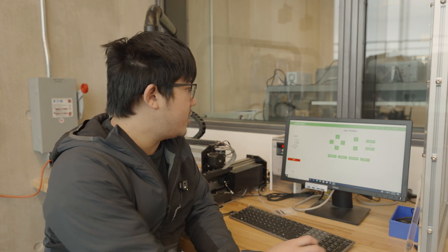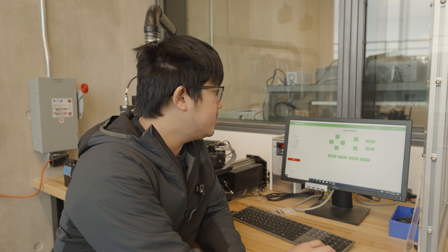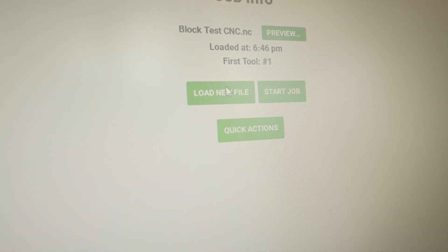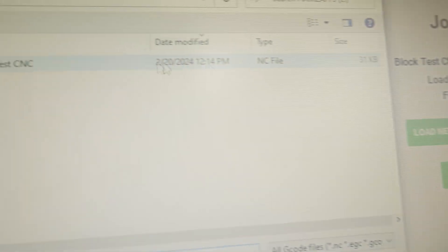So once we're done with the setup, we're going to be able to go in here and hit run, and then we're going to be able to load our G-code file off of our flash drive. So once we're ready to go, we can hit load new file, and we're going to want to pull the G-code file off of our flash drive.